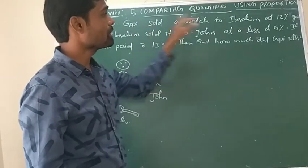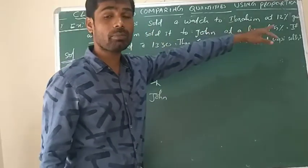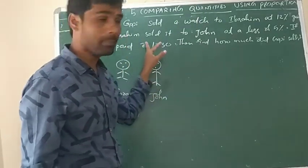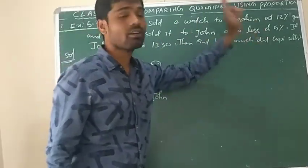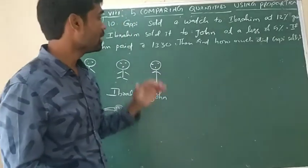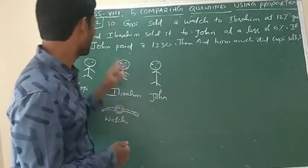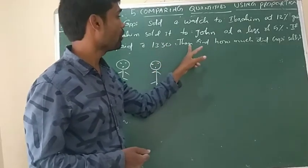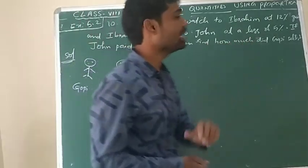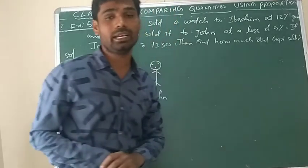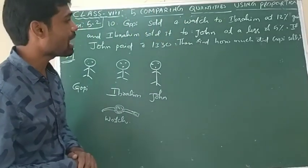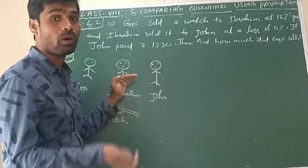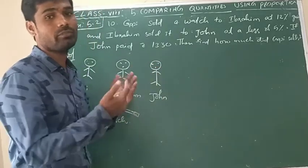Gopi got the profit — 12% profit. And who got the loss? Ibrahim, at 5% loss. If John paid rupees 1330, find how much Gopi sold it for. So what is the amount Gopi sold to Ibrahim? We don't know what amount Ibrahim paid.